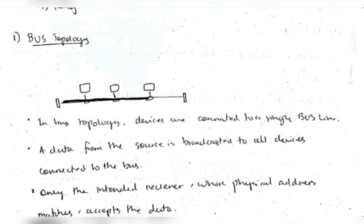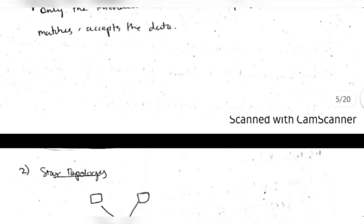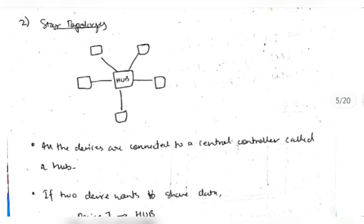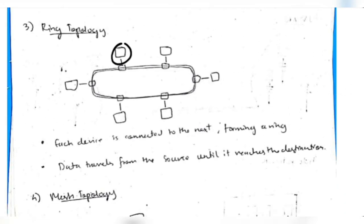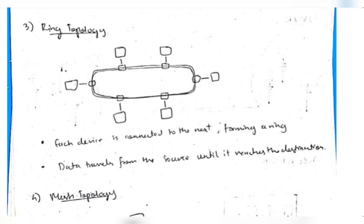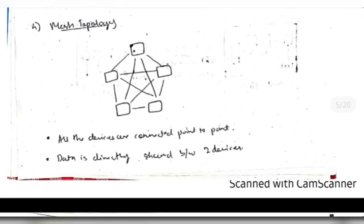In bus topology, all devices connect to a single bus. Device one sends data to the bus, and the receiver collects it from the bus. In star topology, all devices connect to a central hub; data goes from a device to the hub, then to the receiver. In ring topology, data travels through the bus to each device; if a device is the receiver it accepts the data, otherwise it passes it along until the receiver gets it. In mesh topology, each device is connected directly to every other device — it's a one-to-one communication.